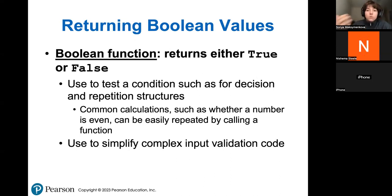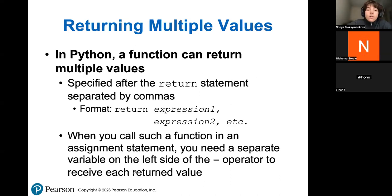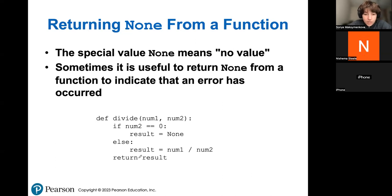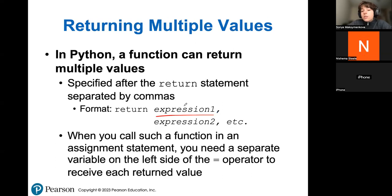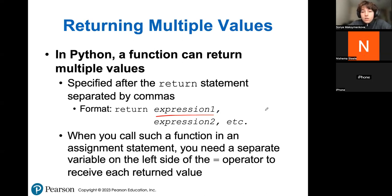You can return multiple values in Python — it's pretty easy to do. You just say 'return' and then specify what you want to return, separated by commas. You can return as many values as you want — there's no limit. There's not really a big difference in how your program will work; you just return multiple values back to your program.